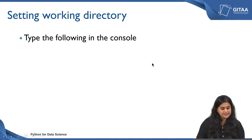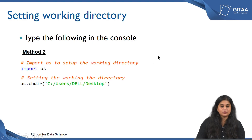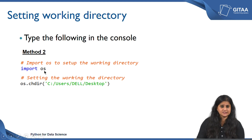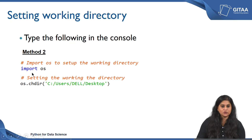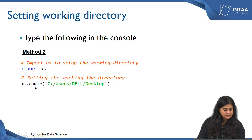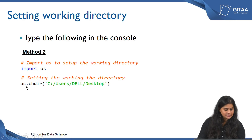Let us look at the second and third method. You need to import a library called OS, which stands for operating systems. Before you use a function from this library to change the directory you need to import it. Import is a function that you use to load a library to your environment. Once you load the library OS into your environment you can use the function chdir, which means change directory. You need to use the name of the library, which is OS, followed by a dot and then chdir.